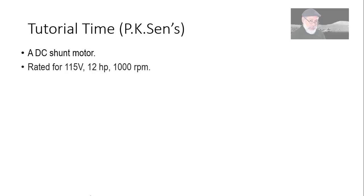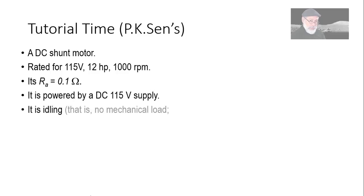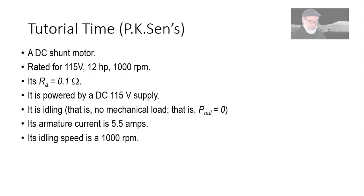We're given a DC shunt motor with those rated values. The armature has a resistance of 0.1 ohms. The motor is powered from a DC power supply of 115 volts. We're told that it's idling. What does it mean? It means that it has no mechanical load attached to it. And in numbers, it means that P-out is 0 watts. The armature current is measured and it's 5.5 amperes.